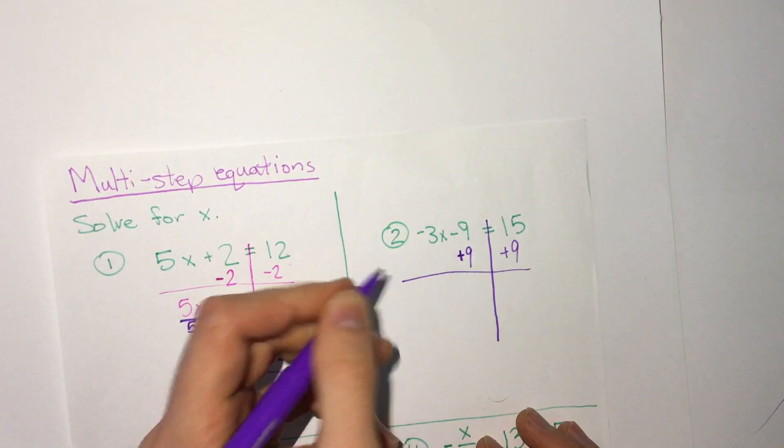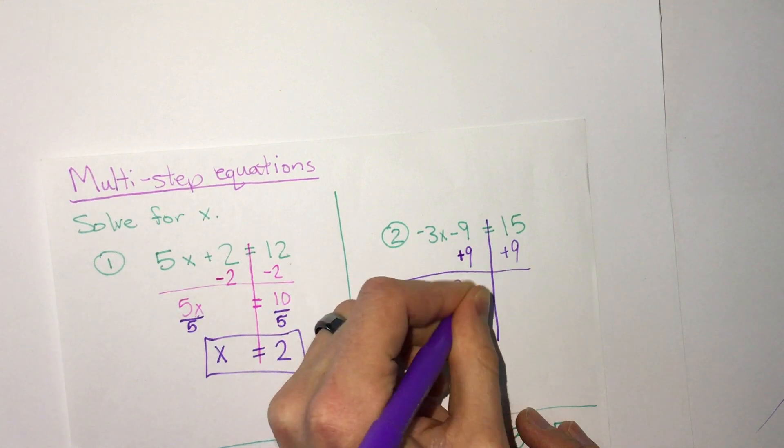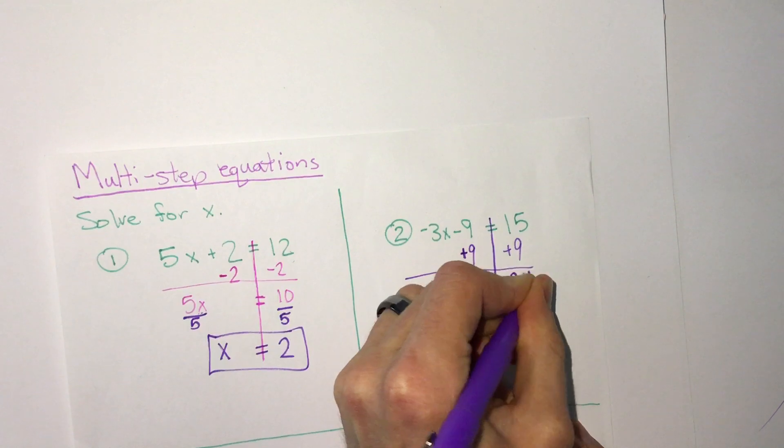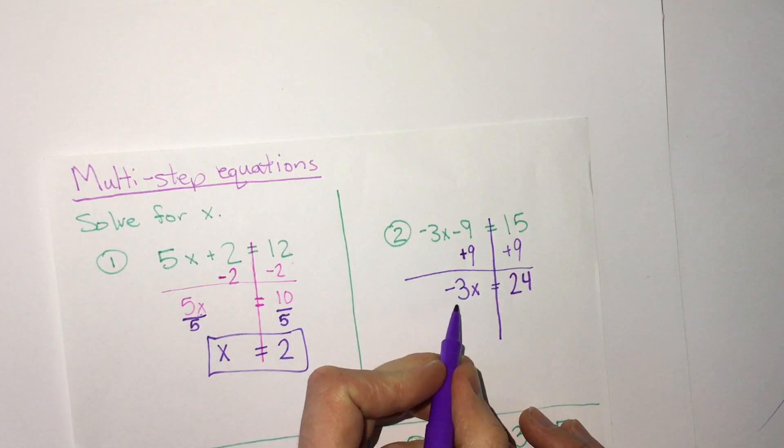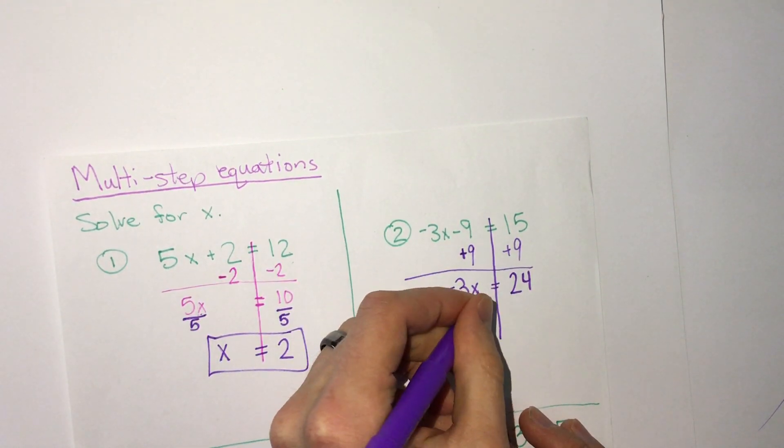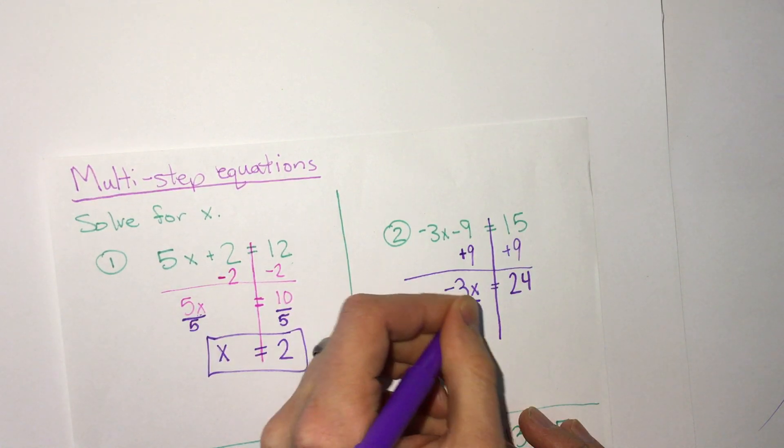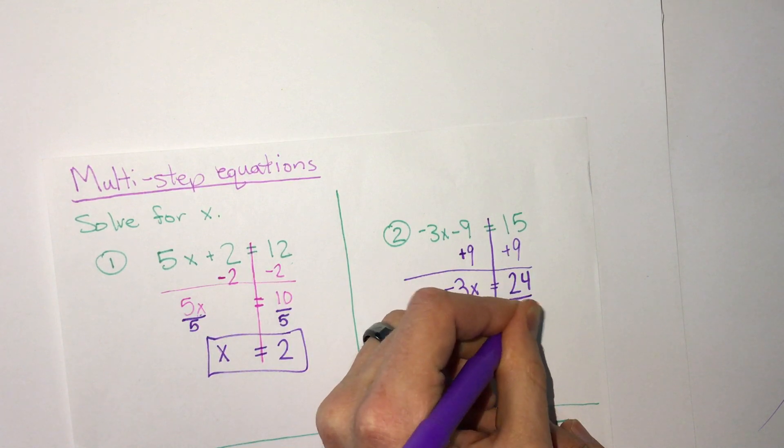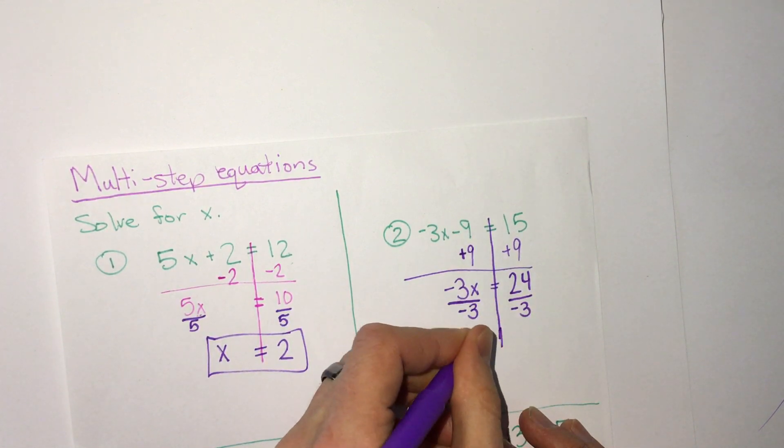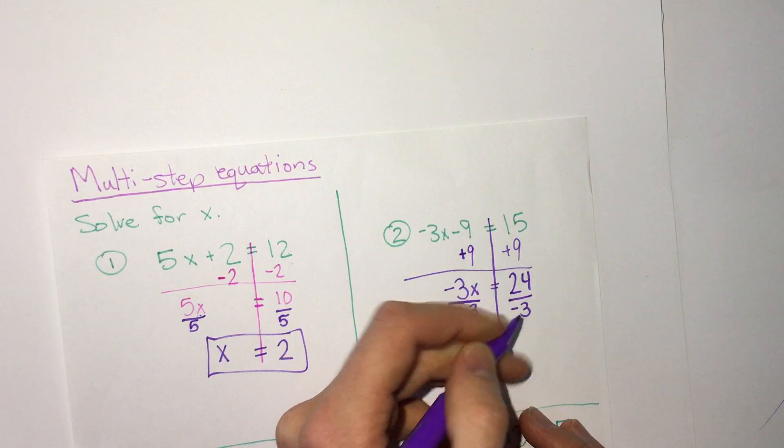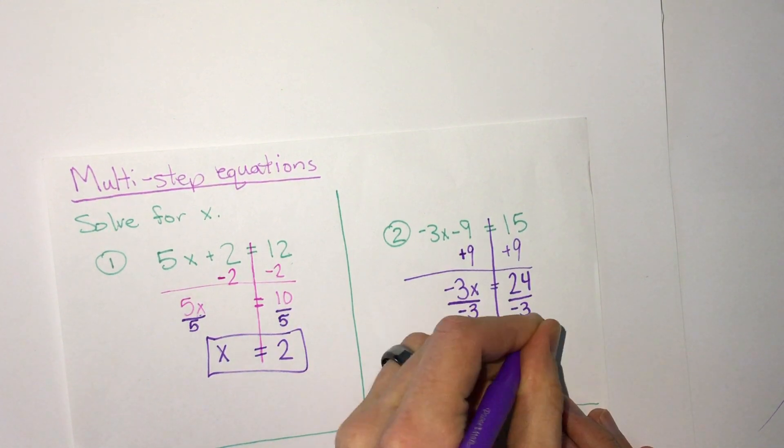So negative 9 plus 9 is 0, so we have negative 3x left on the left side. 15 plus 9 is 24. And then all we have is multiplication left, so to do the opposite, we divide negative 3 divided by negative 3, do the same on both sides, we get x equals 24 divided by 3 is 8, with a negative we have negative 8.